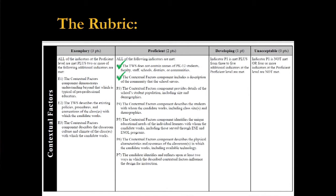I talk about the community. I talk about the school. I talk about my classes. I talk about individual learners. And then the last two things I haven't already mentioned: indicator six — you've got to talk about the physical resources in the classroom.